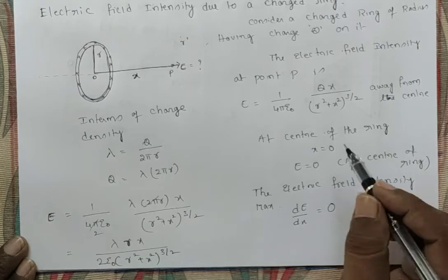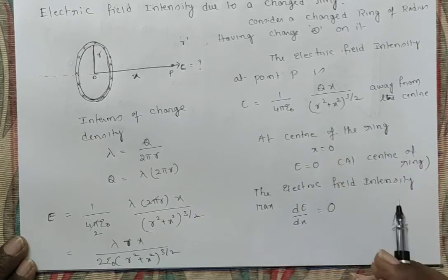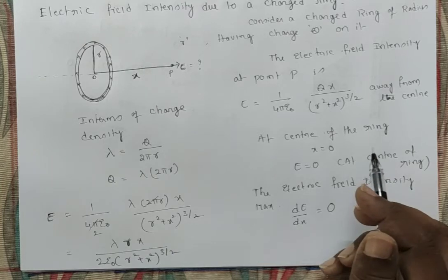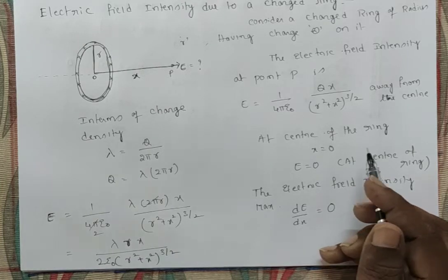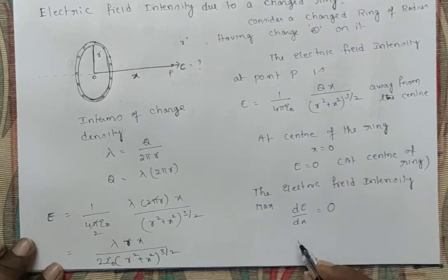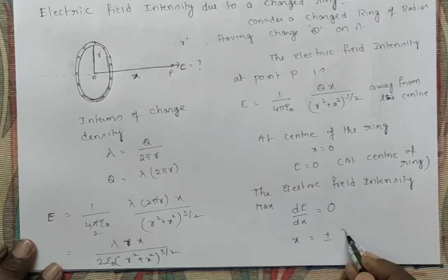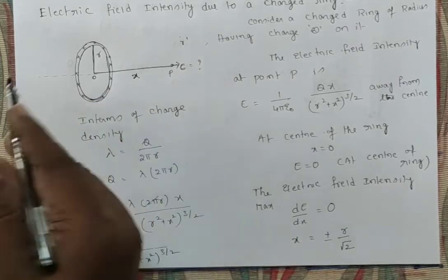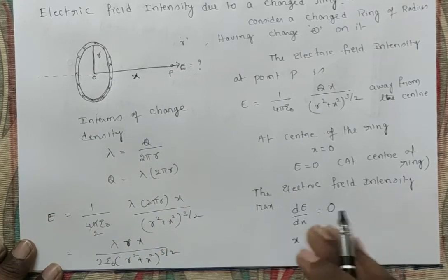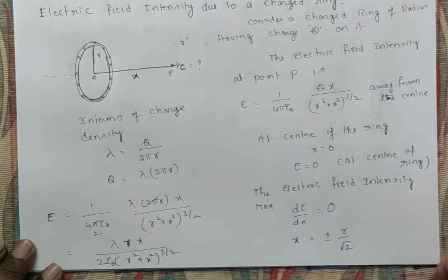After performing this differentiation using the U by V rule, finally we get X = ±R/√2. This means on the left side at a distance −R/√2 from center the intensity is maximum, and on the right side at +R/√2 the intensity is also maximum.